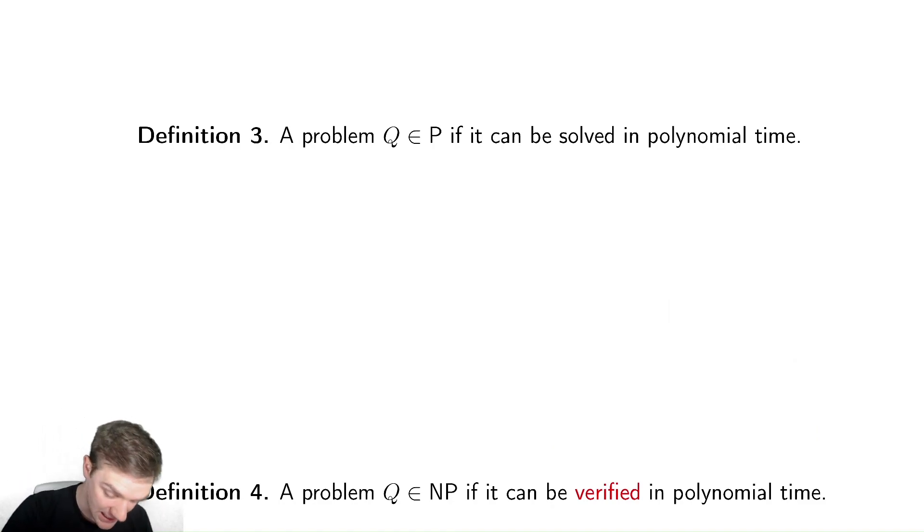So things we've studied so far that have this: minimum spanning tree, shortest path tree, union find, all of our sorting algorithms, even the Fibonacci numbers, which we looked at.